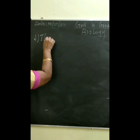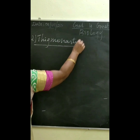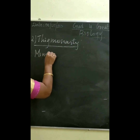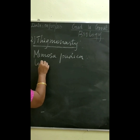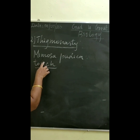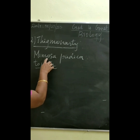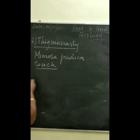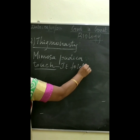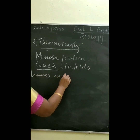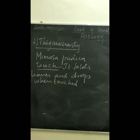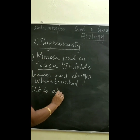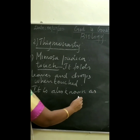The next nastic movement is thigmonasty: movement of a part of a plant in response to touch. Example: Mimosa pudica, the touch-me-not plant, which folds its leaves and droops when touched. Mimosa pudica is also known as seismonasty.